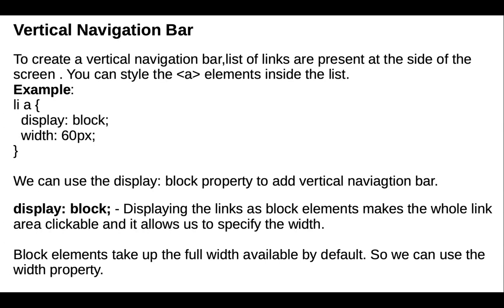Next is the vertical navigation bar. To create a vertical navigation bar, a list of links is present at the side of the screen. You can style the anchor elements inside the list. We use the display property with value block for the vertical navigation bar. You can also adjust the width of the navigation bar using the width property. Block elements take up the full width available by default.